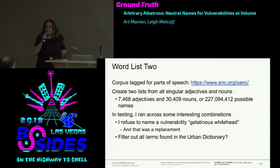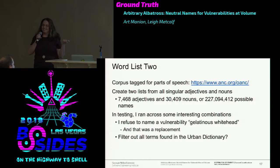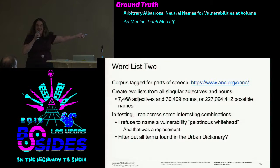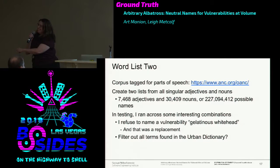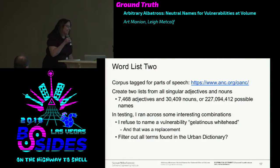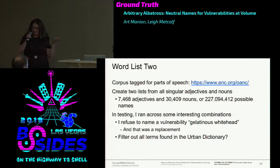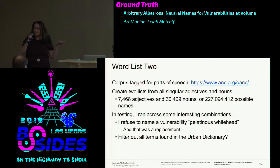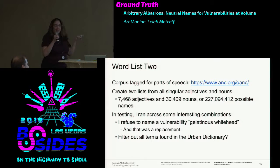In testing I ran into some interesting combinations. Would you like to name a vulnerability 'gelatinous whitehead'? And that's the nice one—I had to take the nasty one out. It was suggested to me by some statisticians that maybe I should filter out all words in the Urban Dictionary, but I said: hey, I'm having fun with this. Let's go find another word list.